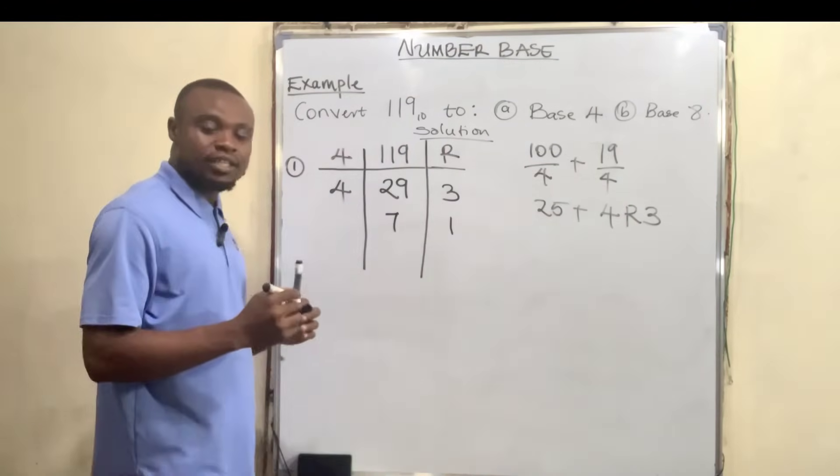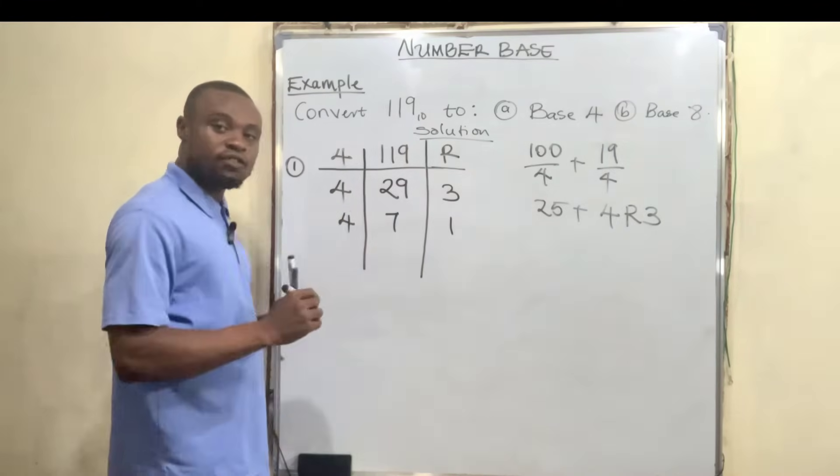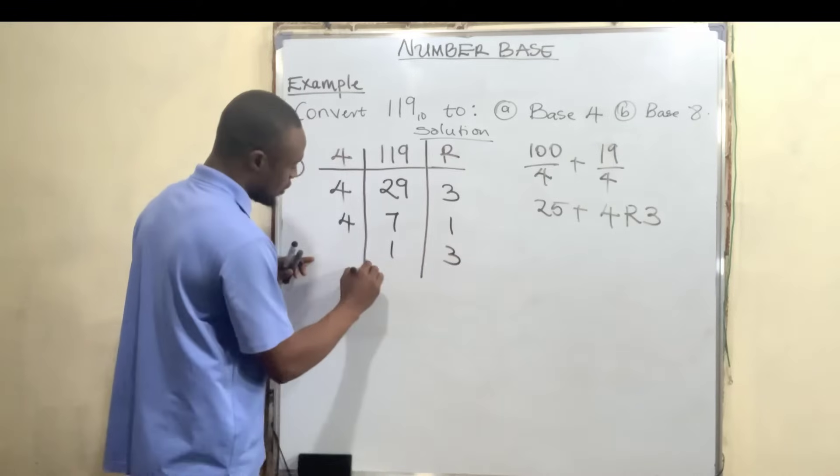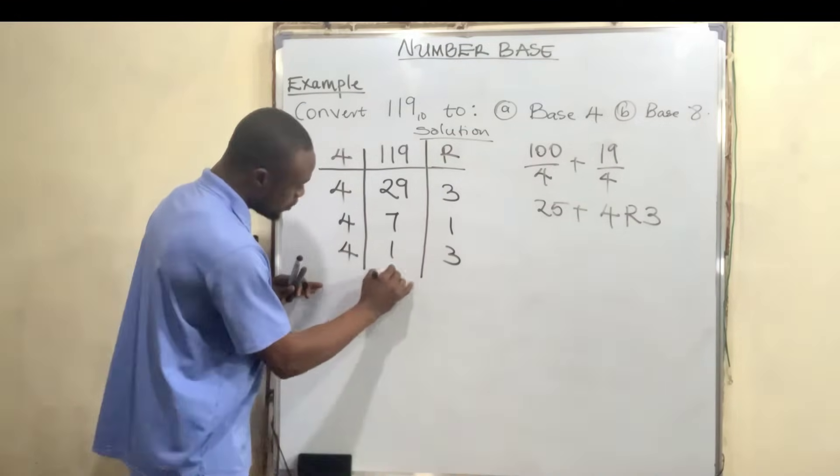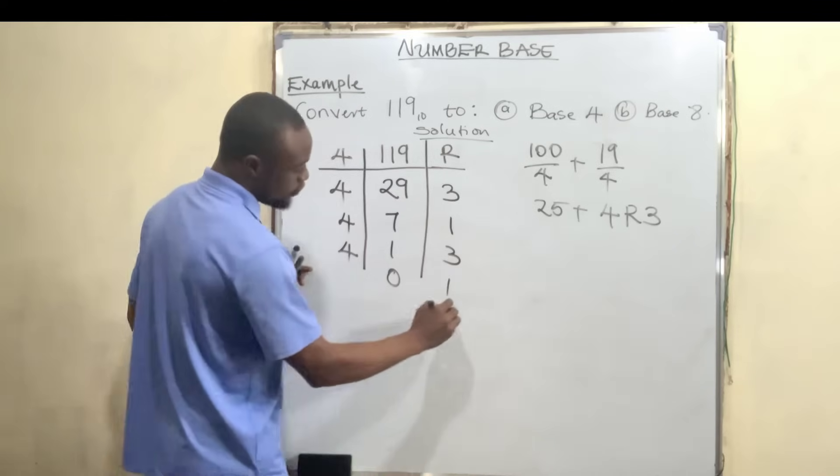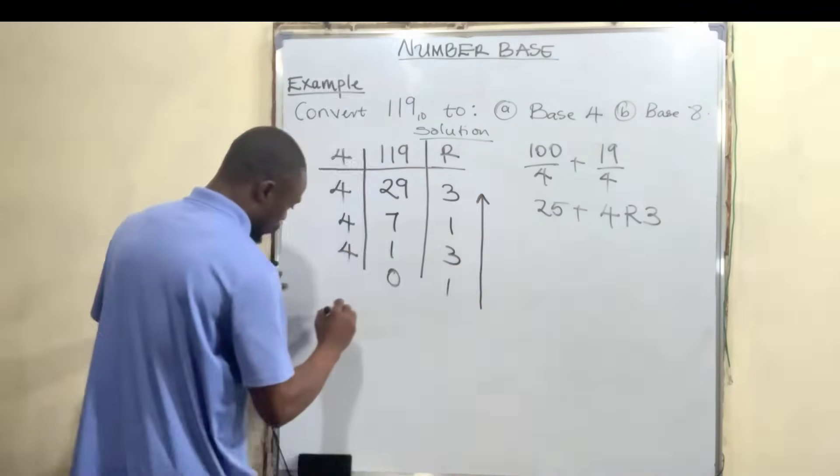7 divided by 4 gives us 1 remainder 3. 1 divided by 4 gives us 0 remainder 1. If we pick these numbers from the bottom to the top, we now have our answer.